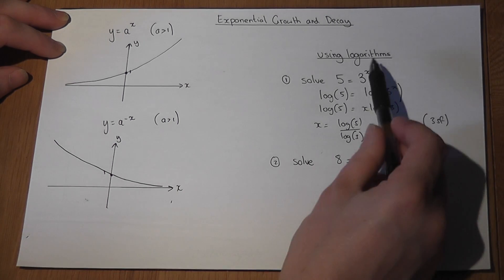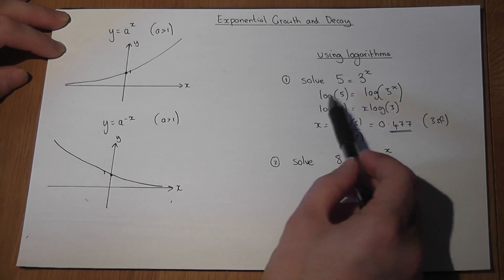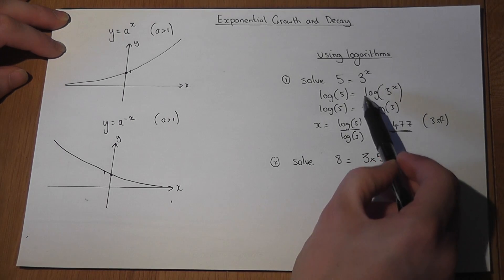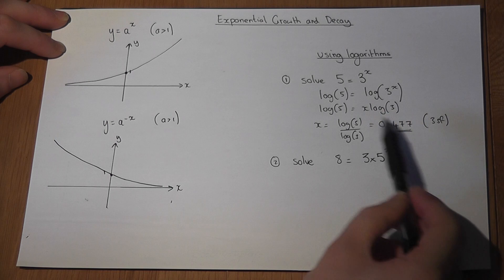So when the unknown is a power, we can take logs of both sides, and the power falls down. We then rearrange the equation to find x.